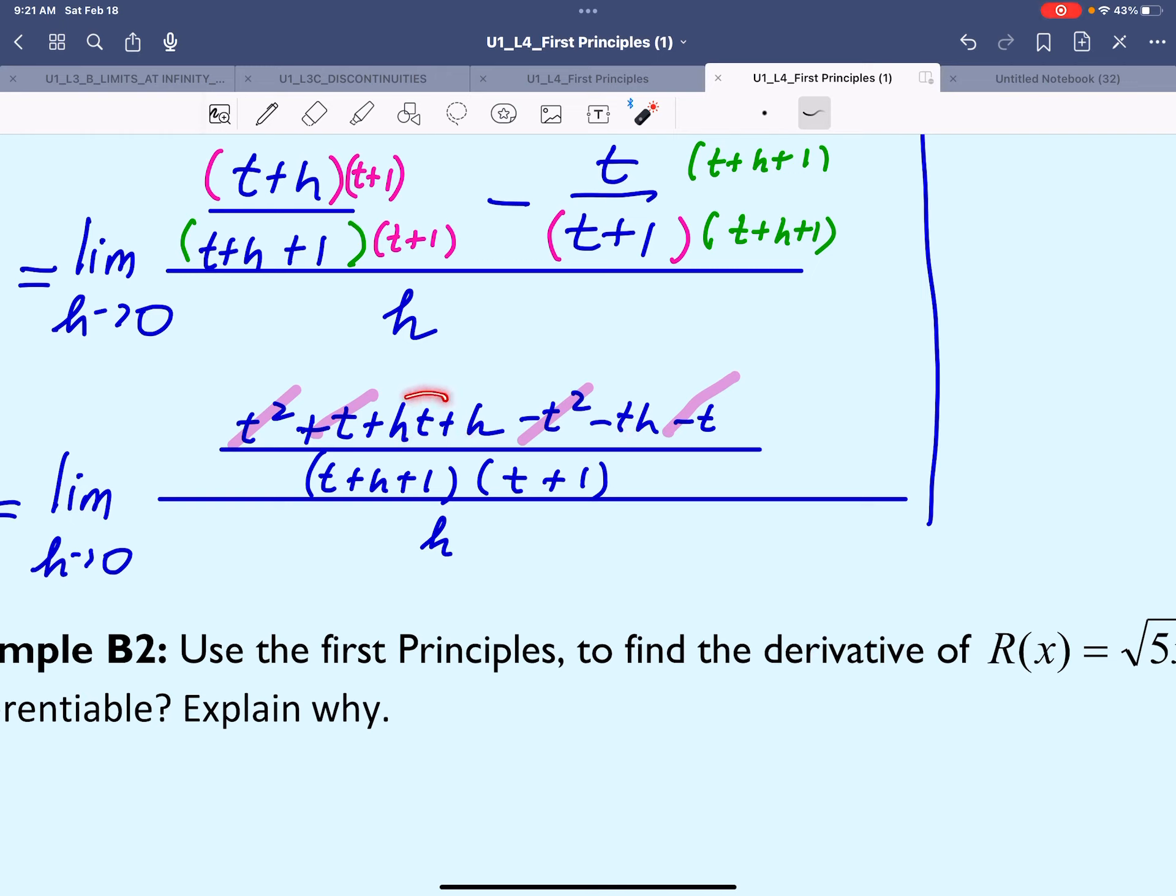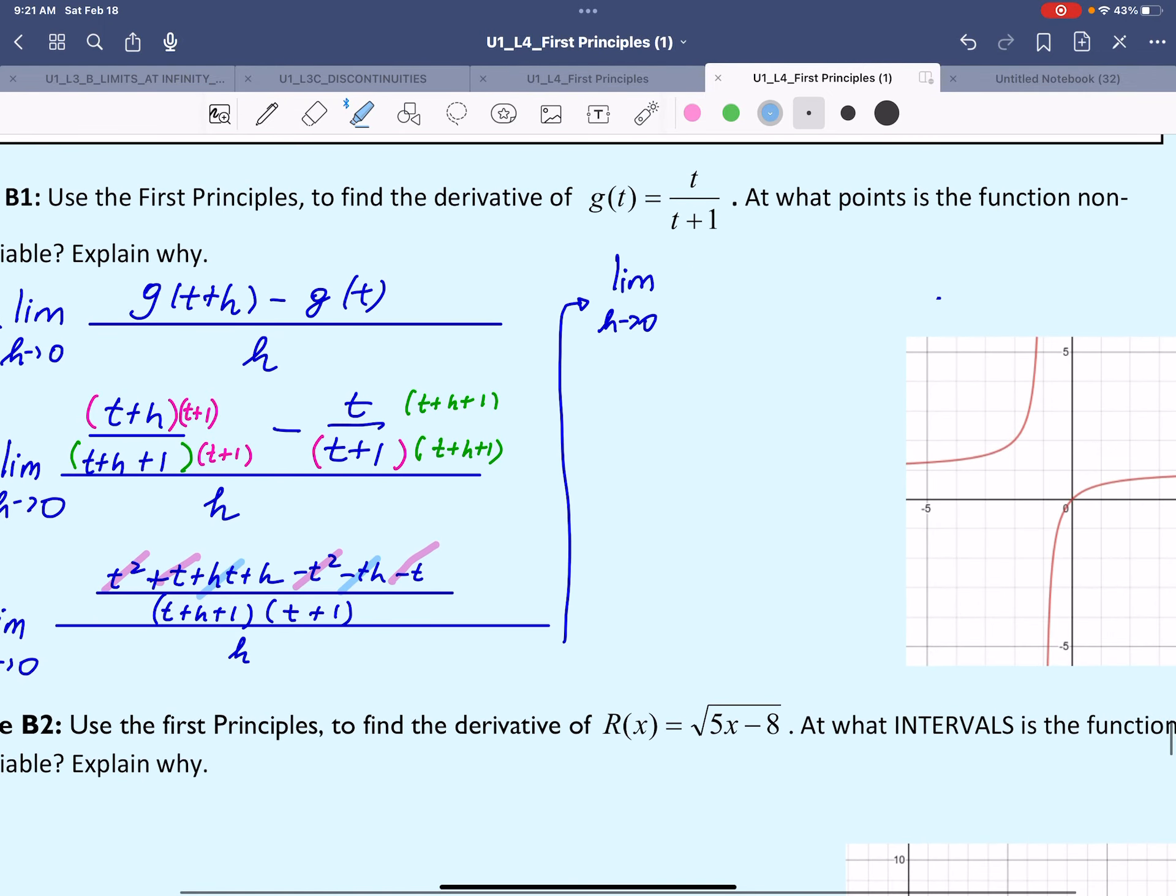It seems we can simplify this as well. The numerator will now have only h. The denominator will have the two factors: (t+h+1) times (t+1), and then divide it by h.